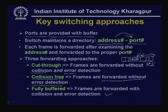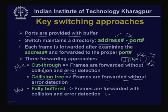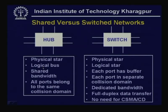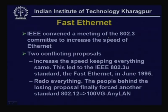In cut-through, delay is minimum but frames may have errors or suffer collision. In fully buffered, delay is maximum since the entire frame must be received and checked before forwarding. Collision-free has intermediate delay — you receive up to 64 bytes then forward. These approaches are used in switches when applying switching technology. Now let's focus on increasing speed by increasing the data transfer rate — from 10 Mbps enhanced to 100 Mbps.